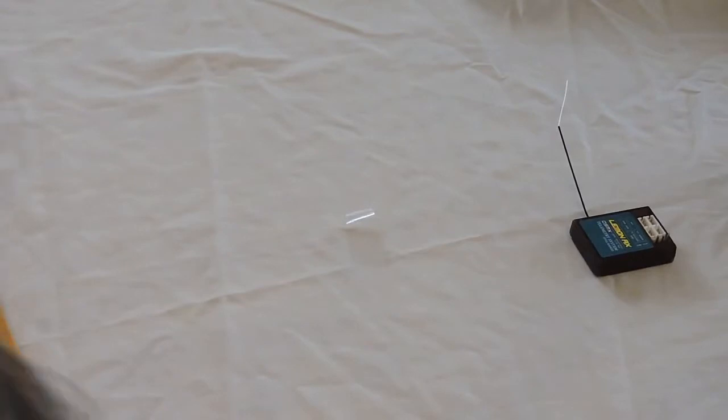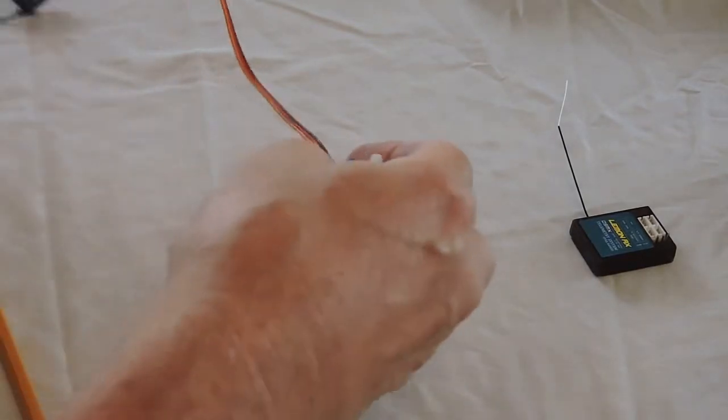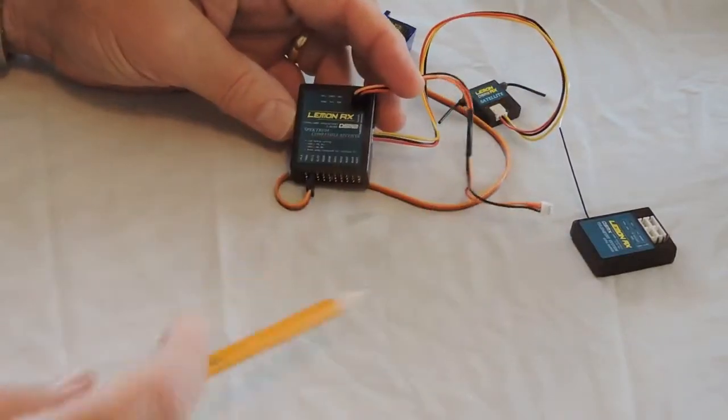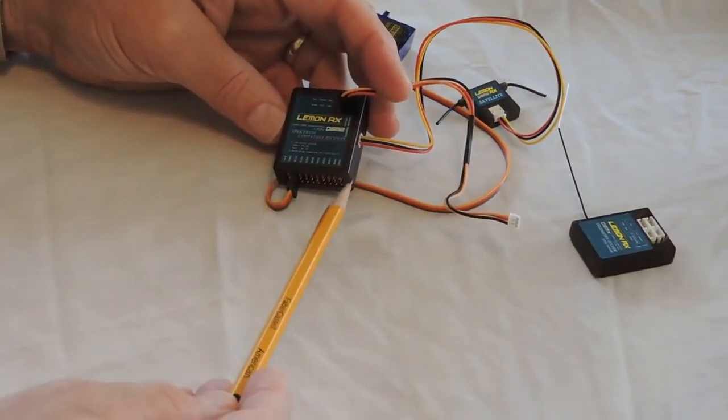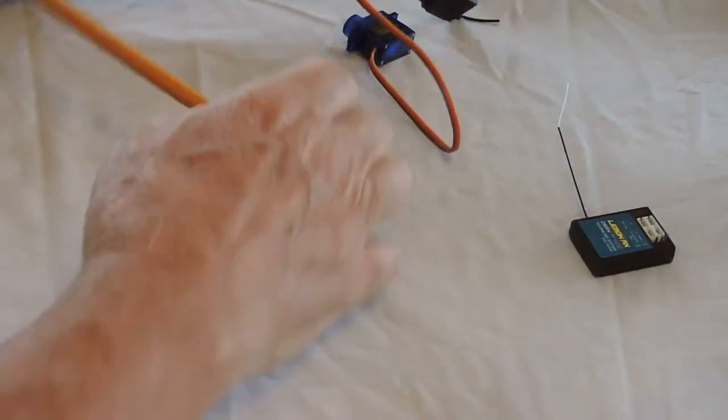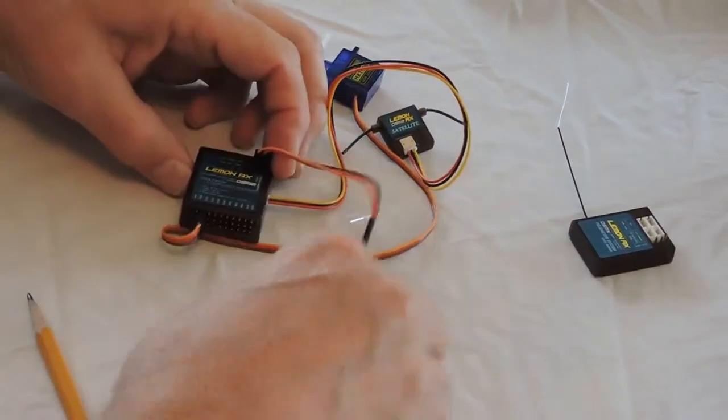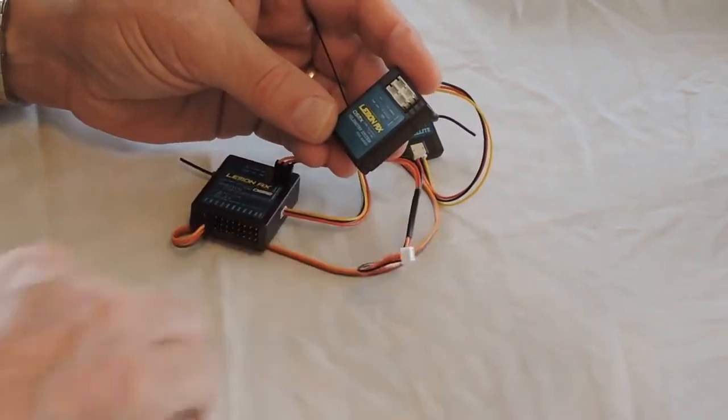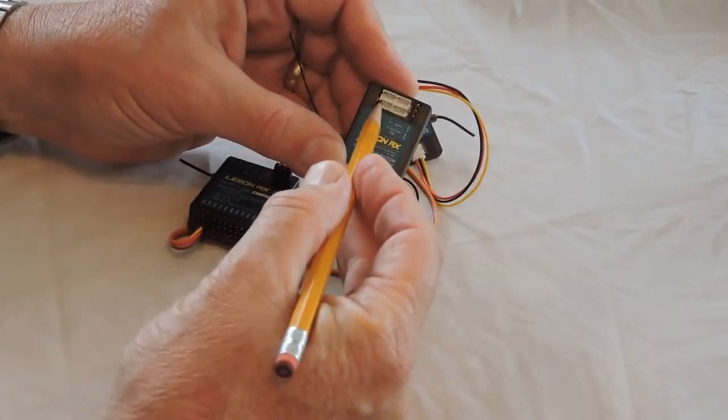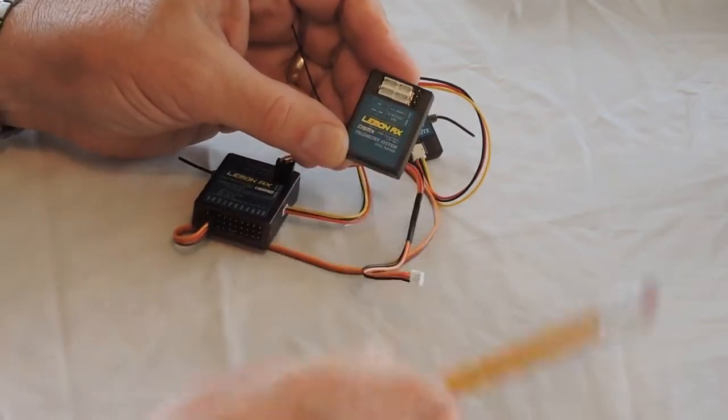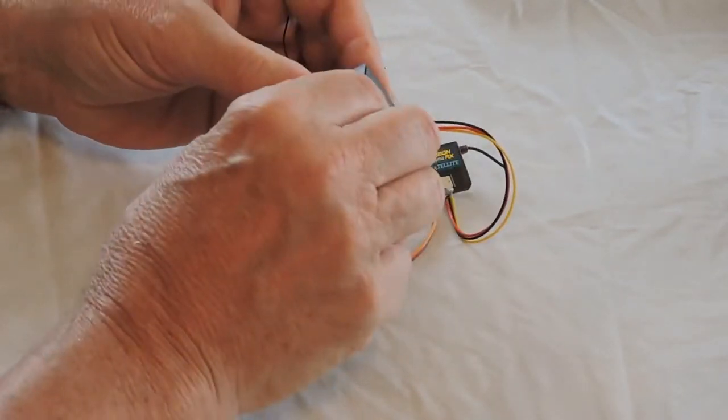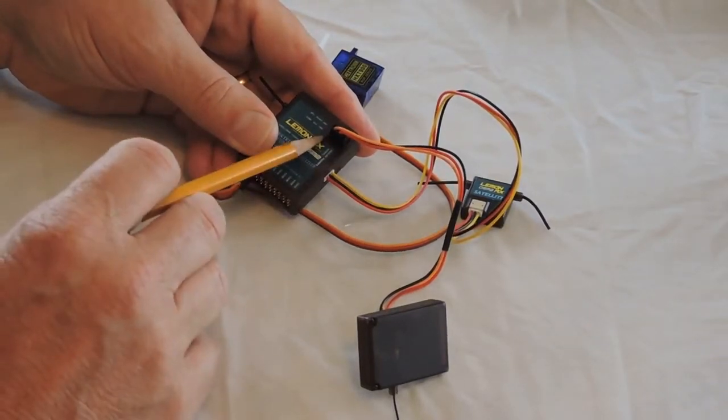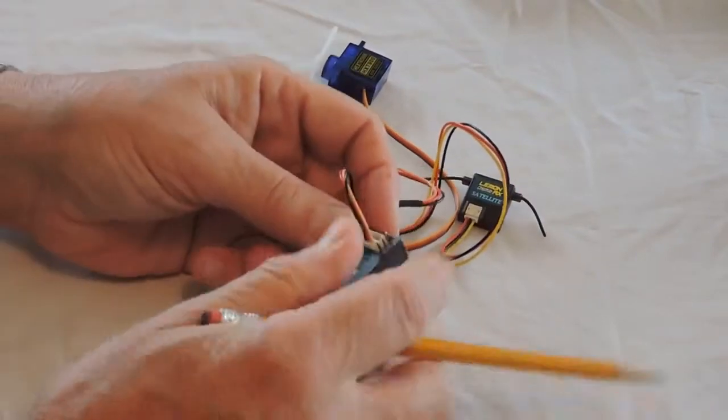The Lemon, by comparison, is far more traditional. Here is the DSM-2 10-channel receiver with the Lemon satellite, and I have a generic 9-gram servo attached. Here is the telemetry module, and all you need to do is connect. It labels all the four inputs. This one is the bind input. So we're going to connect this like so. The other end is connected to the bind input here on the receiver. Essentially I've transferred the bind port from here now to here.